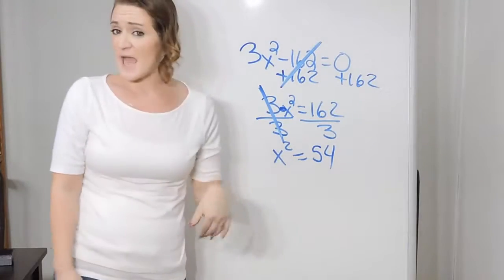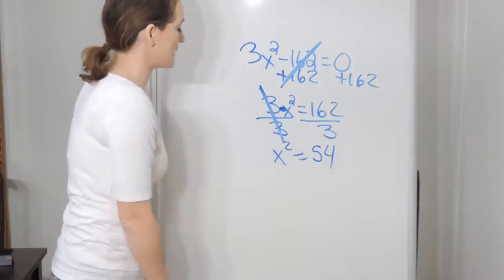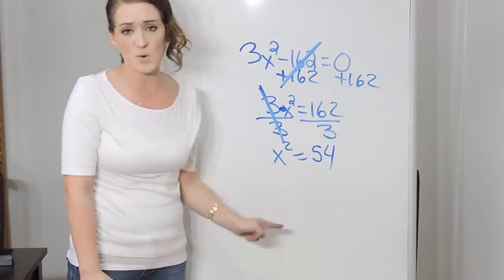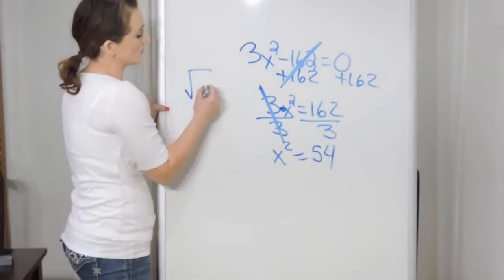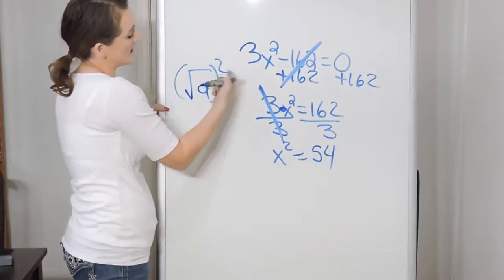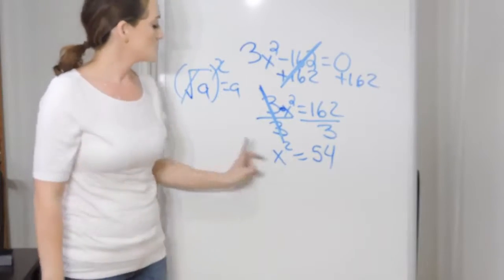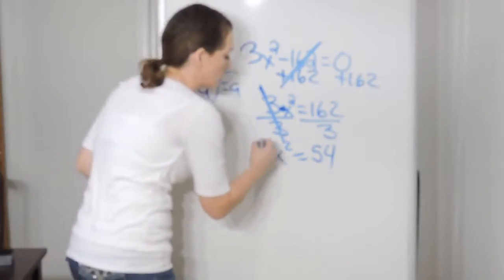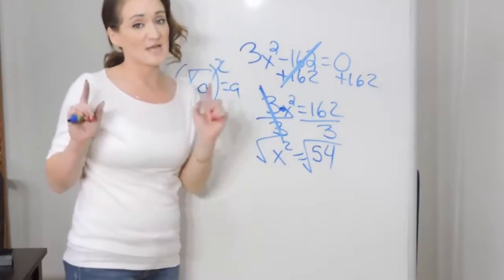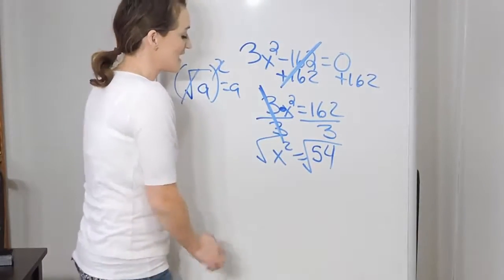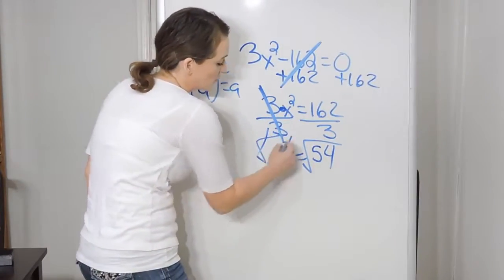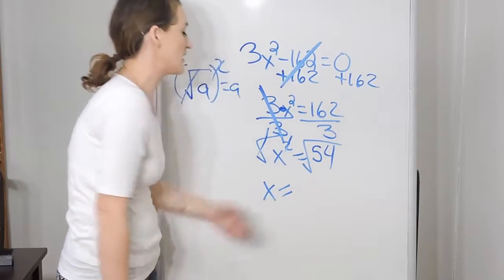All right, so we almost have x by itself. The only thing we need to do here is get rid of this square. Now do remember that a square and a square root are opposites of each other. So if I want to get rid of this square here, I can do so by taking the square root of both sides. And by doing that, the square root and the square is going to cancel on the left-hand side.